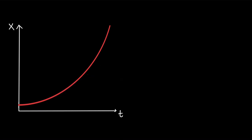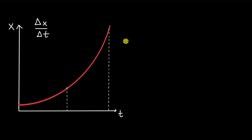We know that we can figure out the average velocity. Let's say we want to figure out the average velocity between these two time instants. We know that this is given by delta x divided by delta t. And that really is the slope of this line. The slope of this line gives us the average velocity over some time interval delta t.